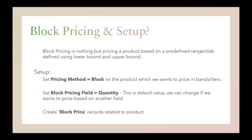So first of all, what is block pricing? Block pricing is nothing but pricing a product based on a predefined range or slab defined using a lower bound and upper bound. To set it up, there is a field called Pricing Method on the product which needs to be set to Block. There is another field called Block Pricing Field which will have a default value of Quantity, and if you want to make block pricing work on some other field, you have to put that API name as a picklist value to Block Pricing Field and select it.